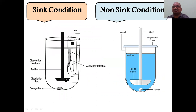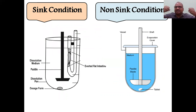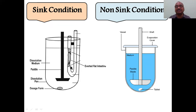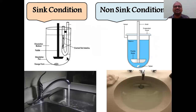If you want to create sink condition in the dissolution apparatus itself, you can modify it by adding an everted rat intestine — cut the rat intestine and reverse it. The drug released from the tablet is absorbed by the intestinal cells and enters the pipe, allowing you to measure how much drug is released and how much is absorbed. This makes the apparatus a sink system.